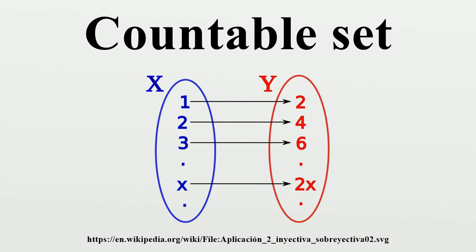Proposition: Any finite set is countable. Proof: By definition, there is a bijection between a non-empty finite set S and the set {1, 2, ..., N} for some positive natural number N, and this function is an injection from S into N. Proposition: Any subset of a countable set is countable. Proof: The restriction of an injective function to a subset of its domain is still injective. Proposition: If S is a countable set and X ⊆ S, then S \ X is countable. Proof: Let F: S → N be an injection. Define G: S \ X → N by G = 0 for elements in X and G = F + 1 for all Y in S \ X. This function G is an injection.